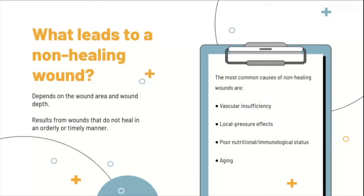What actually leads to non-healing or chronic wounds really depends on the wound area and the wound depth. The larger the wound is, the more likely it will form into a chronic wound. Chronic wounds result from wounds that do not heal in an orderly or timely manner and thus do not have all of the components that make skin functional. The most common causes are vascular insufficiency — if the wound does not get enough oxygen from the blood — local pressure effects, poor nutrition, poor immunology, conditions such as diabetes, and aging, which reduces the elasticity of the skin and can make what would be an acute wound in a young person a chronic wound in an older person.